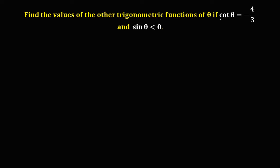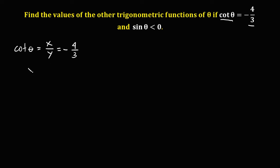Since cotangent theta is equal to x over y, and in the given cotangent theta is negative 4 over 3, therefore x is equal to 4 and y is equal to 3.